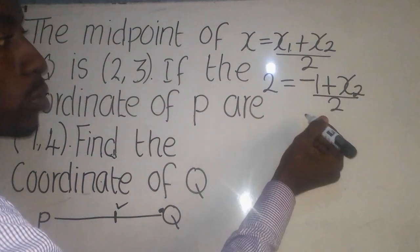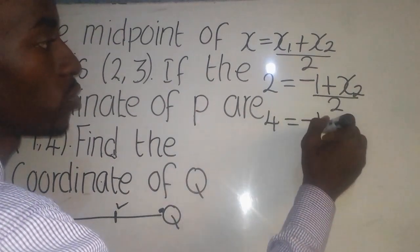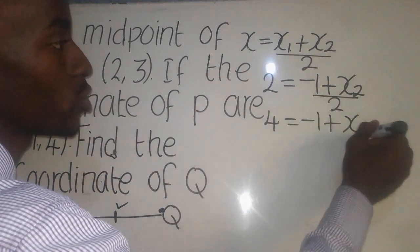From there now, we have to cross-multiply. So it will be 2 times 2, which will give me 4 equal to negative 1 plus X2.